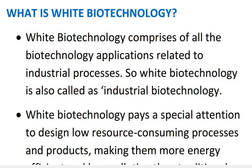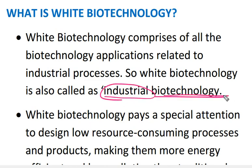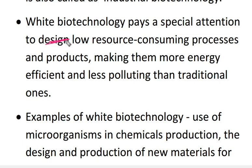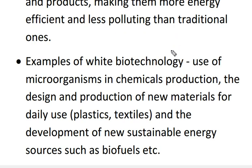Now, the fifth type of biotechnology is white biotechnology, which is related to industrial processes. All biotechnology applications related to industrial processes are called white biotechnology — that is why it is also called industrial biotechnology. By using industrial biotechnology, we can design processes that consume fewer resources, are more energy efficient, and are less polluting than traditional methods, giving products that are environmentally friendly. For example, producing biofuels.